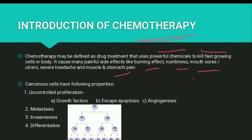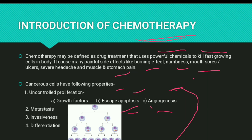Cancerous cells have the following properties: uncontrolled proliferation (unstoppable, uncontrollable cell growth), growth factors, escape from apoptosis, and angiogenesis. To better understand these, we will define apoptosis and angiogenesis, which may also be helpful in your exams.